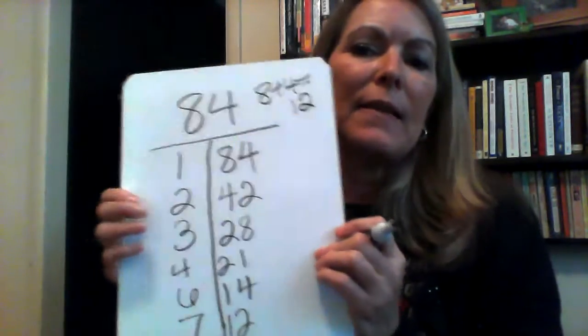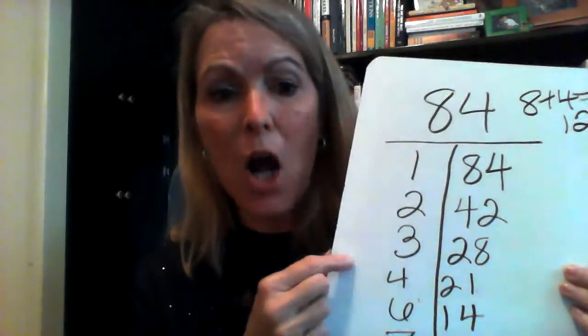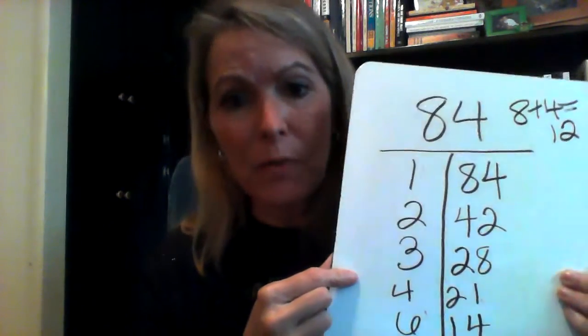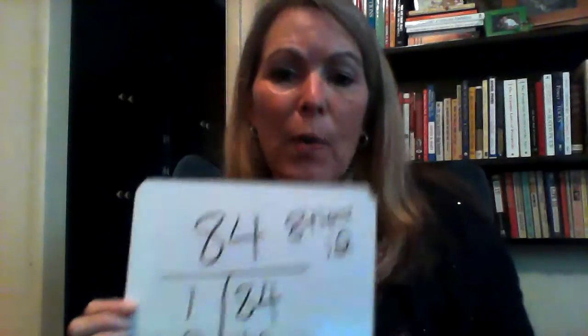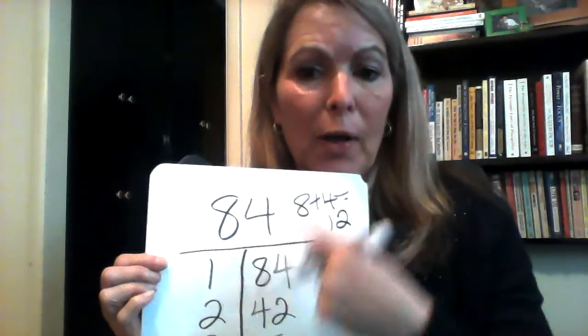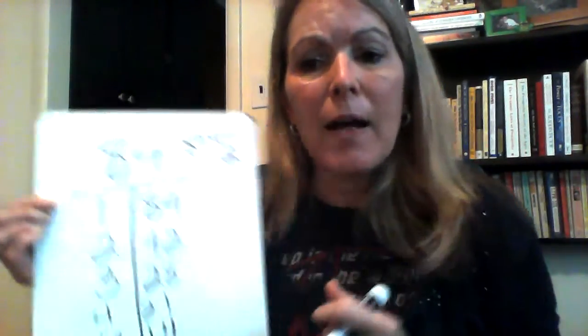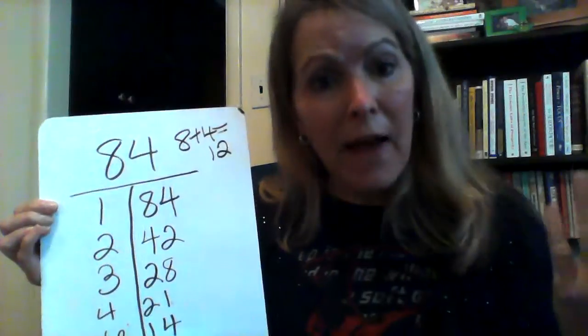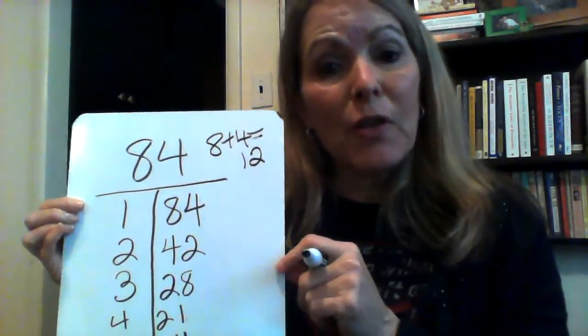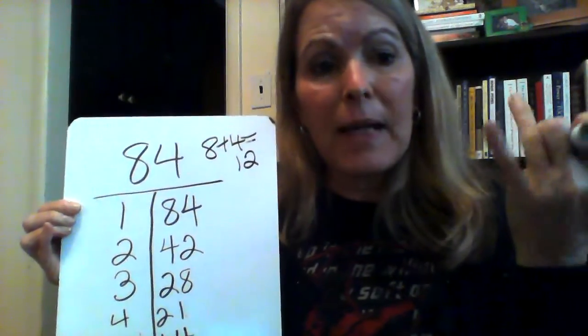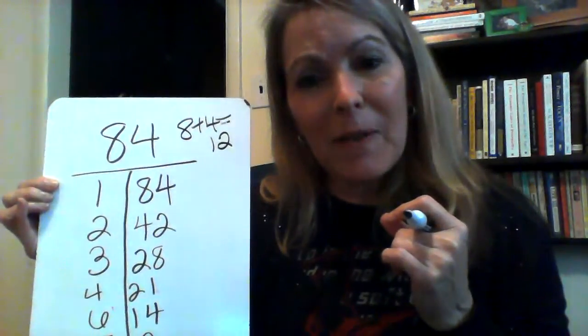The cool, really cool thing, though, is that if the number that you choose is an odd number, all you have to do is check the odd numbers. Because you're never going to make an odd number out of anything that has an even factor. So if you've got an odd number like 95, then all you have to do is check 3, 5, 7, and 9. And that's going to be your divisibility for that.